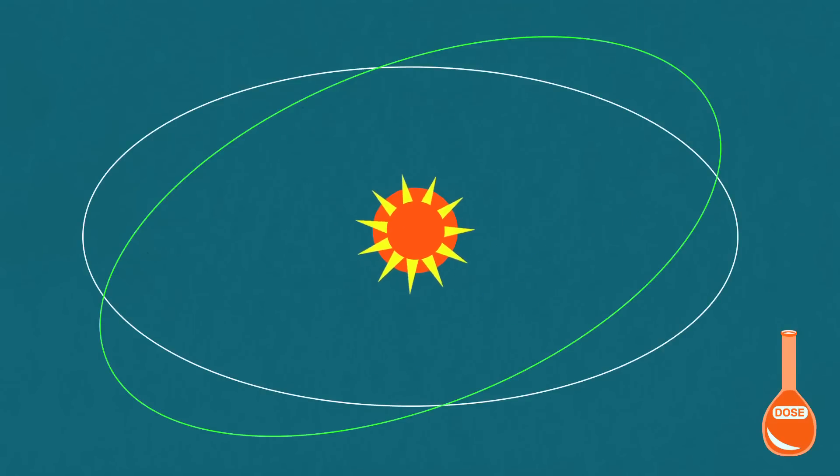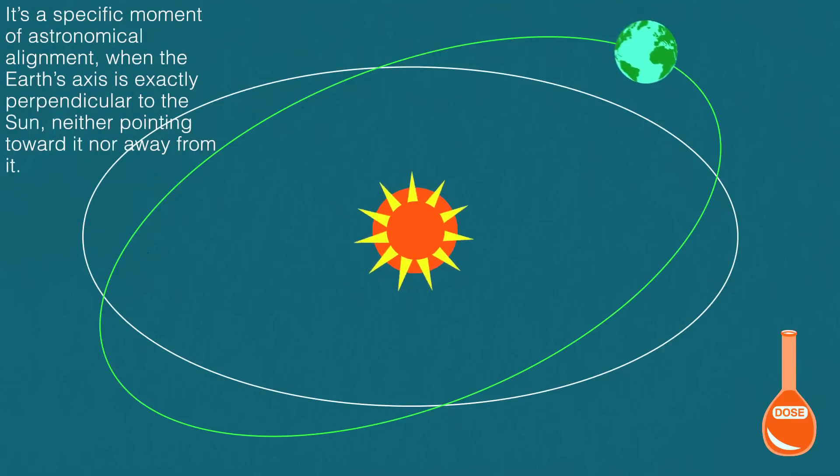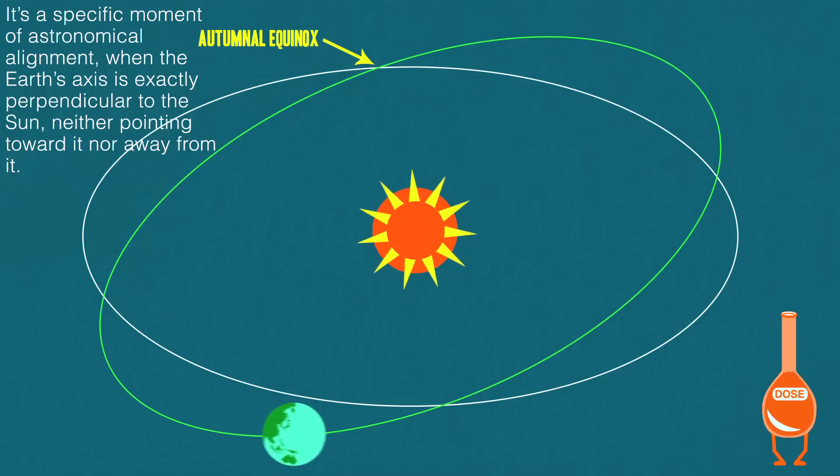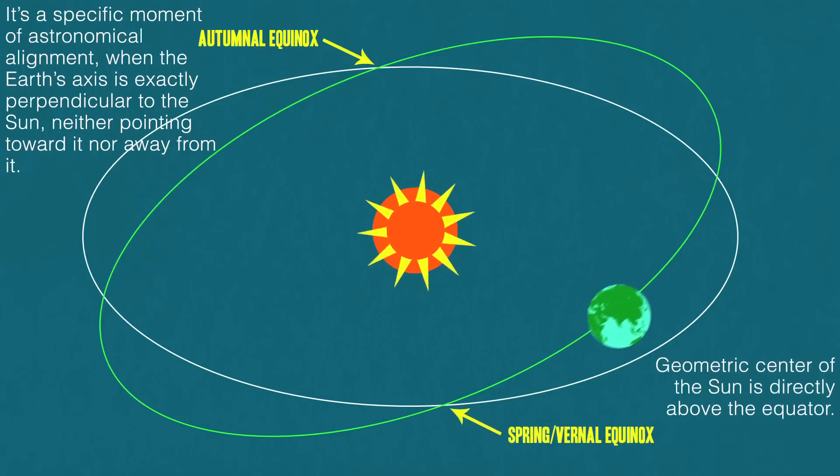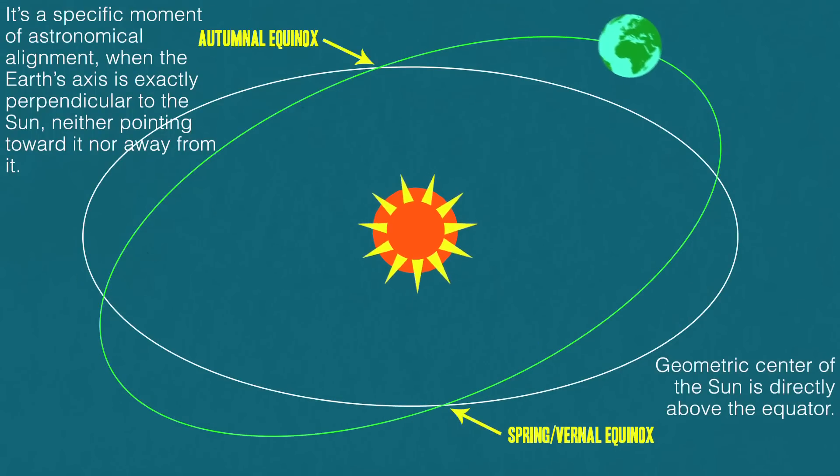For starters, the equinox isn't even a day, it's a moment. A specific moment of astronomical alignment when the Earth's axis is exactly perpendicular to the sun, neither pointing toward it or away from it. This alignment occurs when the geometric center of the sun is directly above the equator.